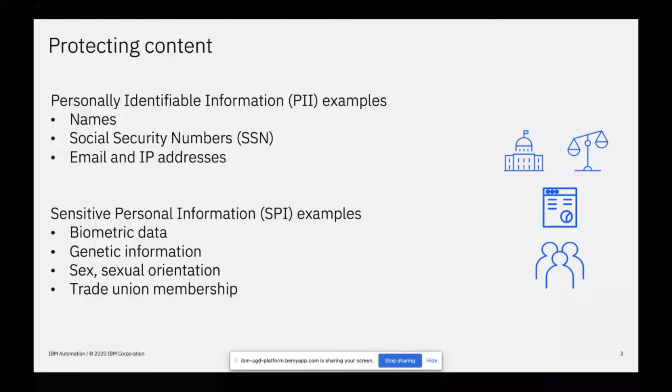Google, eBay, Craigslist — all these entities that we interact with and that have information about us have had security breaches that have pretty much touched us all at least once. And this has led to the evolving and creation of various privacy laws around the globe, and we'll talk about some of what they are in a moment.